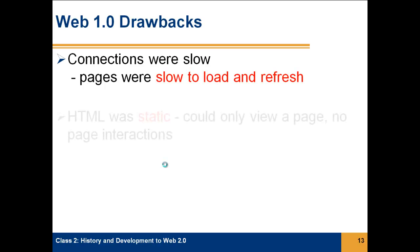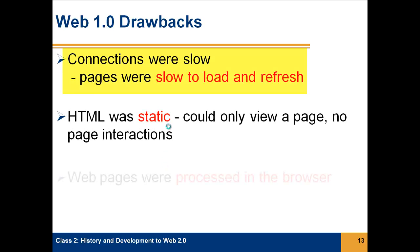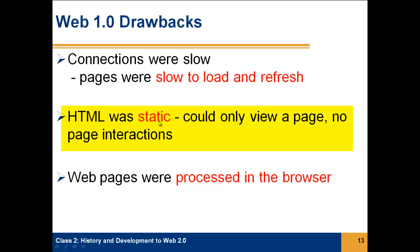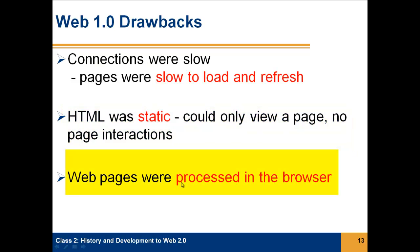So we see some of the drawbacks to Web 1.0. The connections were slow. Pages were slow to reload, and if we needed to refresh them, they had to make a trip to the server and back again. The HTML language was static, meaning once a page was loaded, that page could never change. Everything was processed in the browser, which had some drawbacks because the browser really wasn't as powerful as a computer program would be.